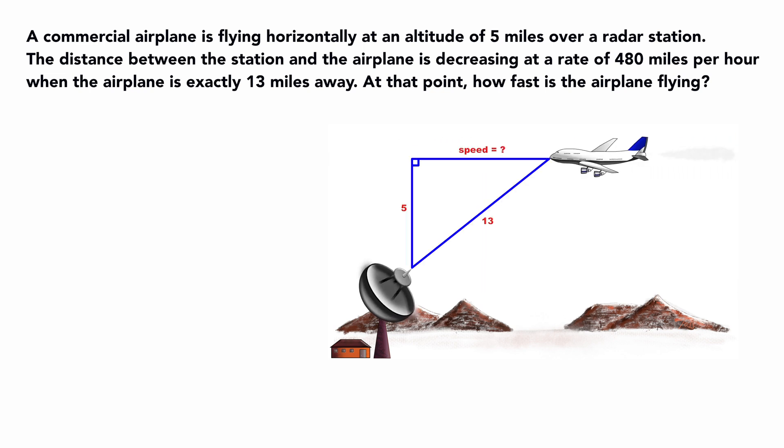This type of related rates problem sometimes comes with an illustration. If not, most likely we would want to associate the problem to a right triangle and using the Pythagorean theorem. First, sketch a triangle, an upside down one, because the point of reference is on the ground.